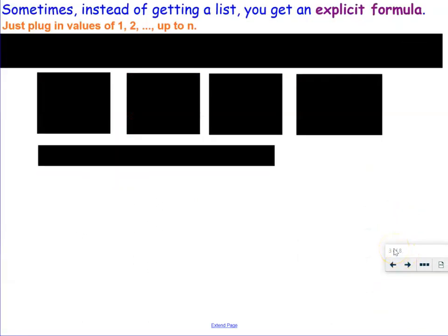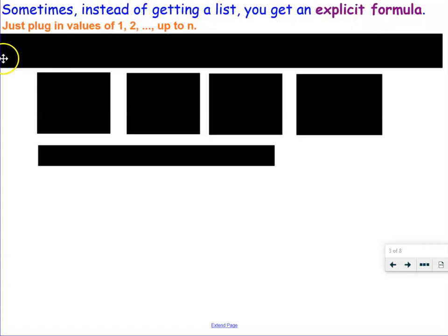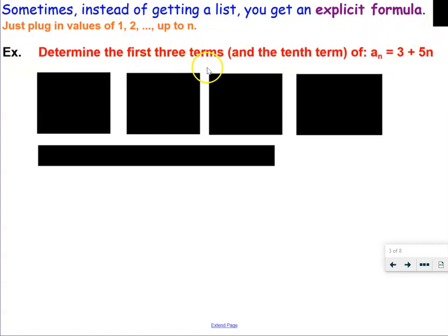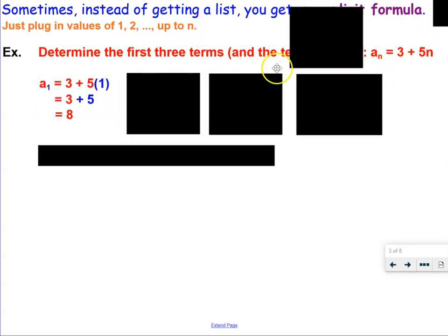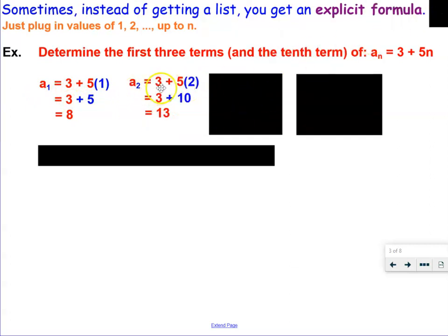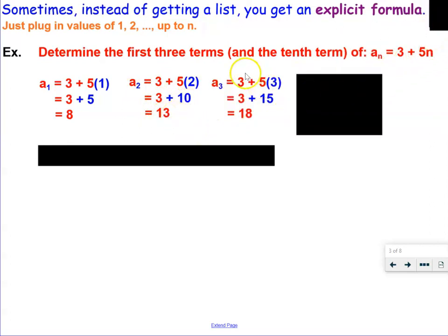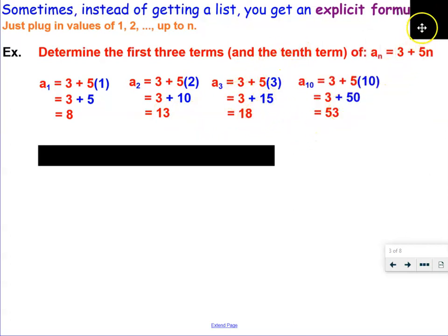Now sometimes instead of getting a list, you get an explicit formula. If you get that formula, just plug in values of 1, 2, all the way up to n. Here's an example: determine the first three terms and the tenth term of aₙ equals 3 plus 5n. Plug in n=1: a₁ is 3 plus 5 times 1, which is 8. Plug in n=2: a₂ is 3 plus 10, which is 13. Plug in n=3: a₃ is 3 plus 15, which is 18. For the tenth term, plug in n=10: 3 plus 50 is 53.